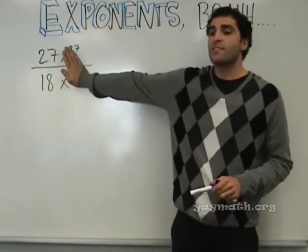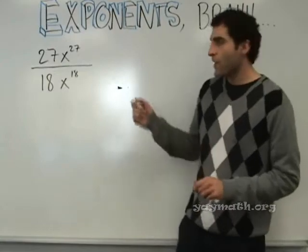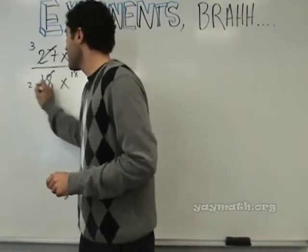Okay, so 27 divided by 18 simplifies to what over what? Three over two. Three over two, good. So, three and two.